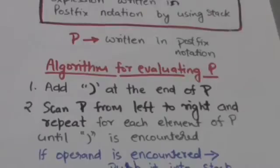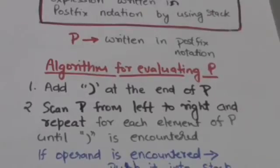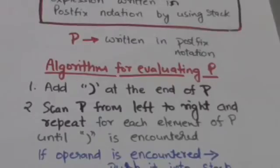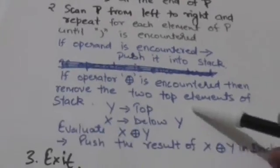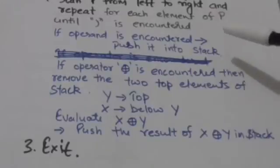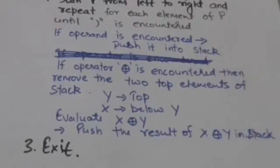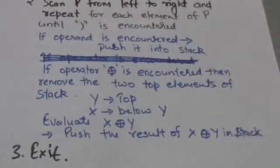In the first step, we will add a right parenthesis at the end of expression P. This right parenthesis acts as a marker to indicate the end of expression P. After this, scan the expression P from left to right and repeat this step for each element of P until the right parenthesis is encountered. If an operand is encountered, we will push it into the stack.